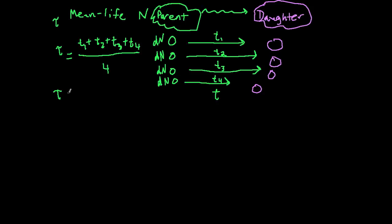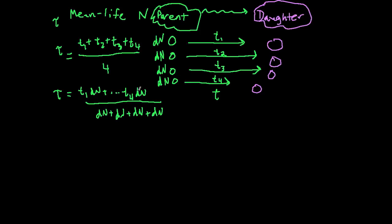Now I could rewrite this by multiplying top and bottom by dn over dn — it's the same as multiplying by one. So I could write t1·dn plus all those plus t4·dn, all over dn plus dn plus dn plus dn. This will again be necessary to set up our integral.